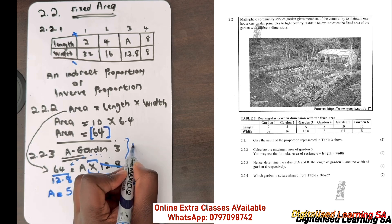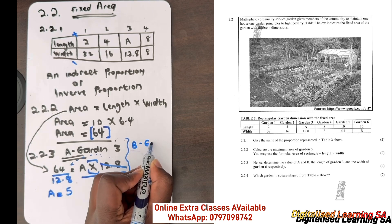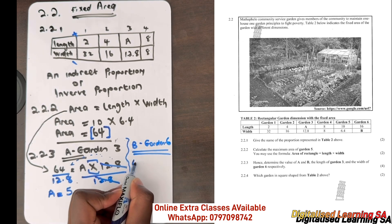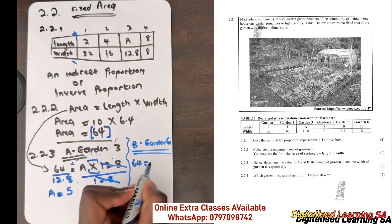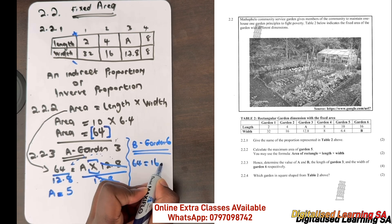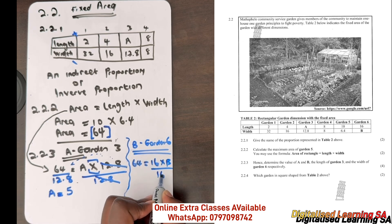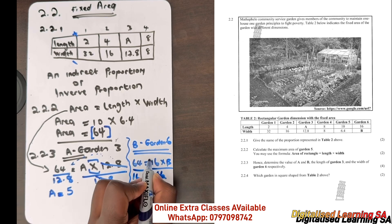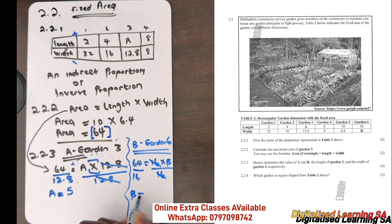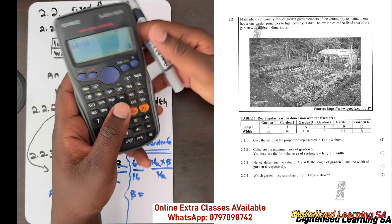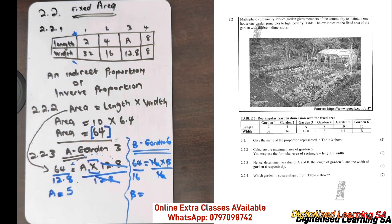We do the same for b — for garden 6. Our area is 64 and our length was given as 16, and our width is b. So we divide by 16. The 16 cancels and b = 64 ÷ 16. The answer is 4, meaning our b equals 4.